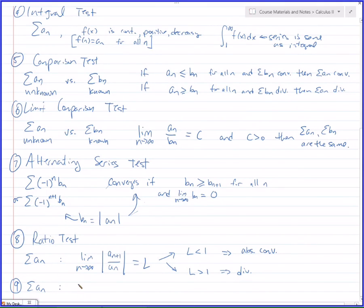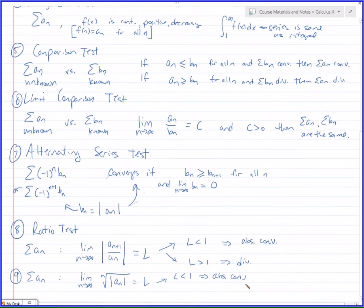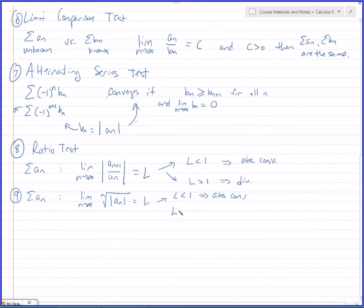Number nine: root test. You take the limit as N goes to infinity of the Nth root of the absolute value of A sub N, and that equals L. If L is less than 1, absolutely convergent; if L is greater than 1, divergent; if L equals 1, you don't know anything. This is the root test.